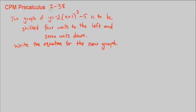This is CPM Pre-Calculus Chapter 2, number 38. The graph of y = -2(x+1)³ - 5 is to be shifted 4 units to the left and 7 units down. Write the equation for the new graph.